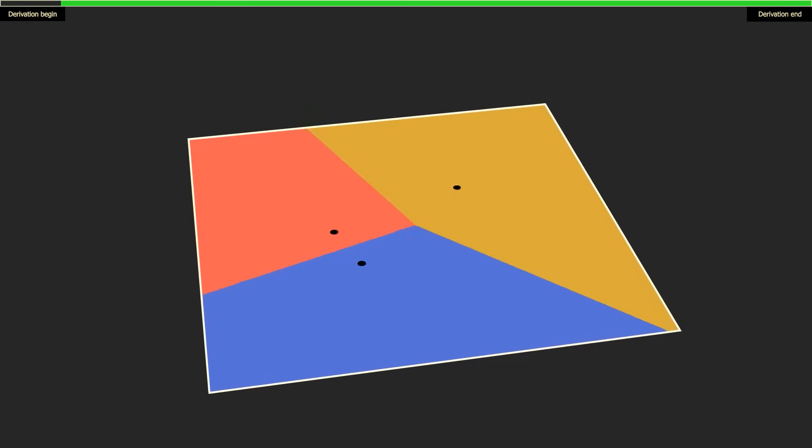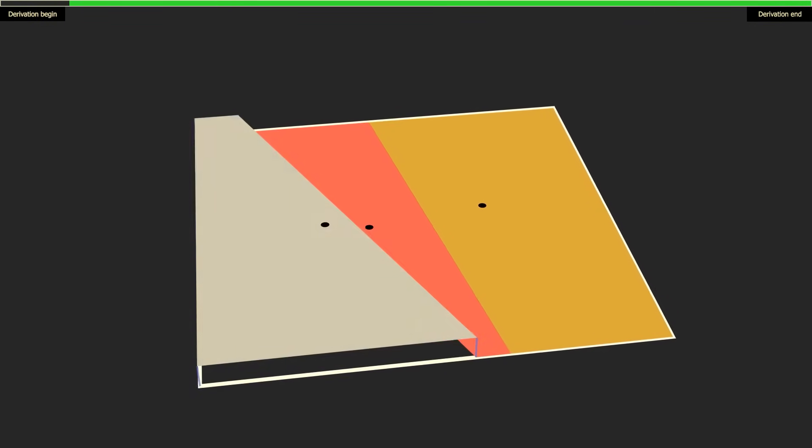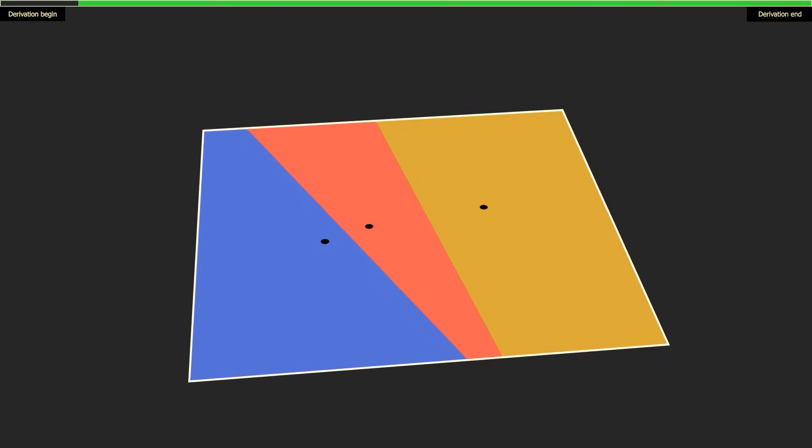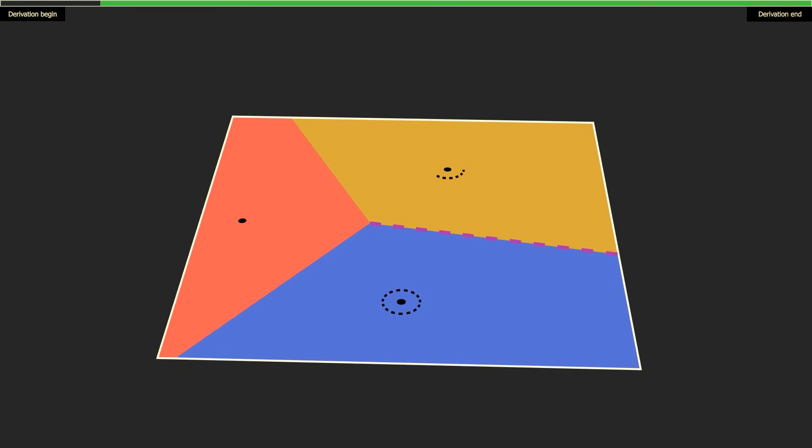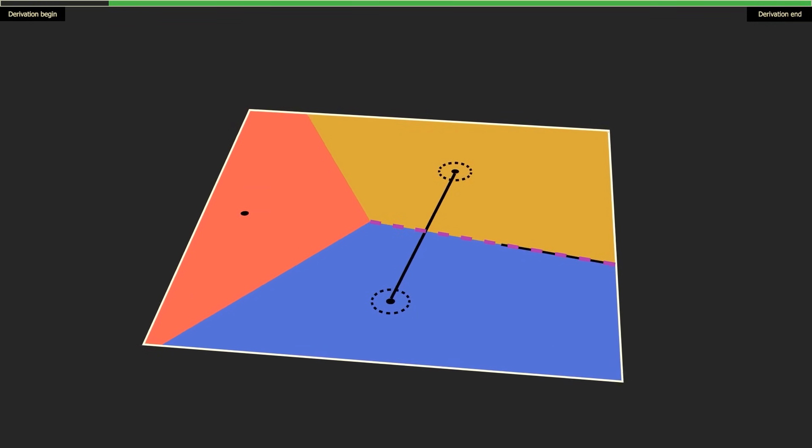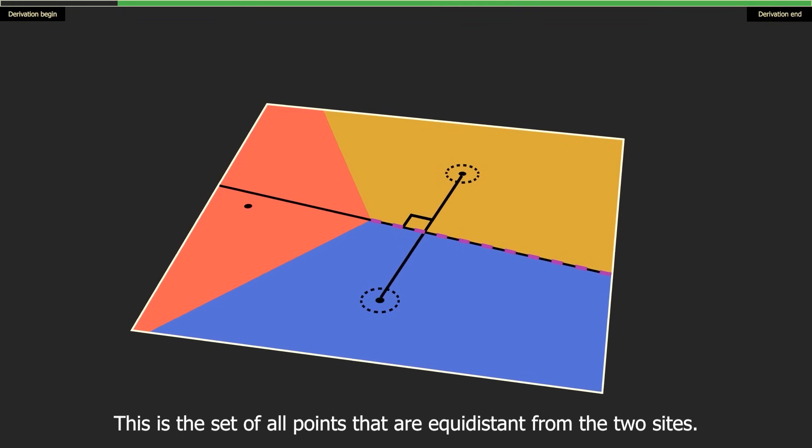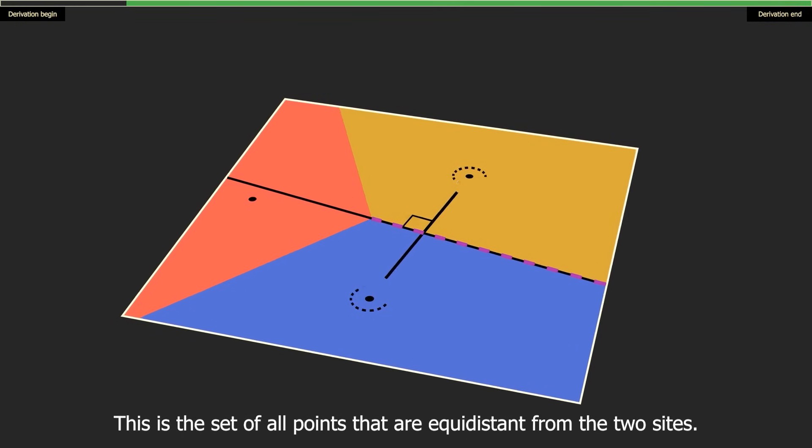Reasoning about the border between cells will help us with the perimeter later. Note that in many cases, cells will have a border of zero. But if the blue and gold cells border each other at all, any part of that border lies completely on the perpendicular bisector of the line that goes between the sites.